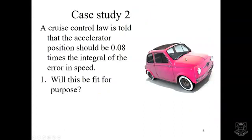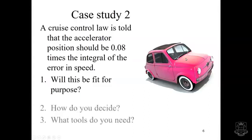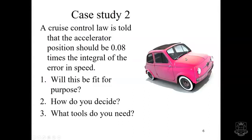Here's the second case study. A cruise control law is told that the accelerator position should be 0.08 times the integral of the error in speed. So will this cruise control do the job? How are you going to decide whether it's doing the job well enough or not, and what tools do you need?